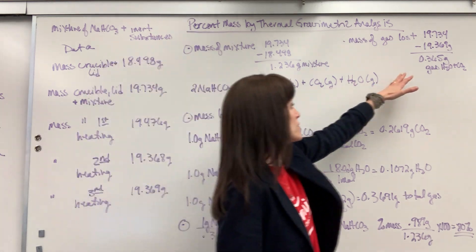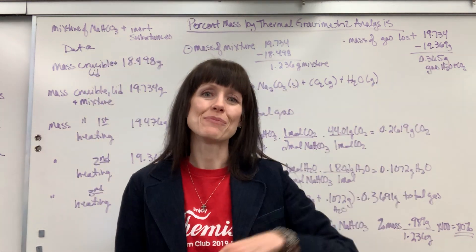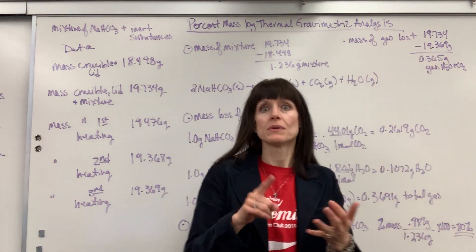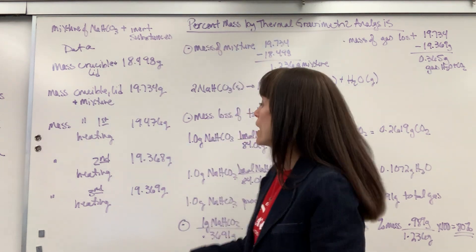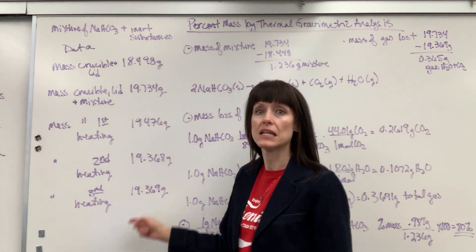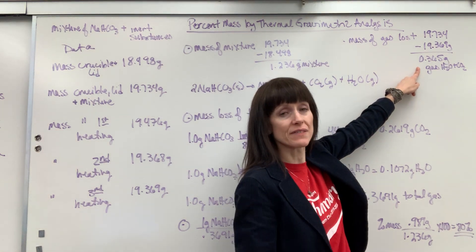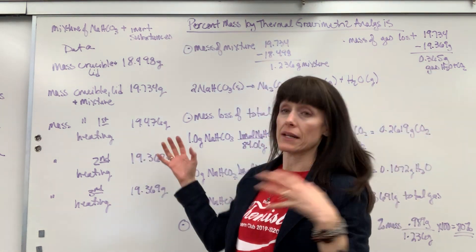Then what we're trying to figure out is how much gas, what's the mass of the gas that was released? So you're going to take the mass of the crucible lid mixture and subtract it from that final heating. The difference is the amount of gas. It's the mass of the gas that's released. So data collection, that's it.